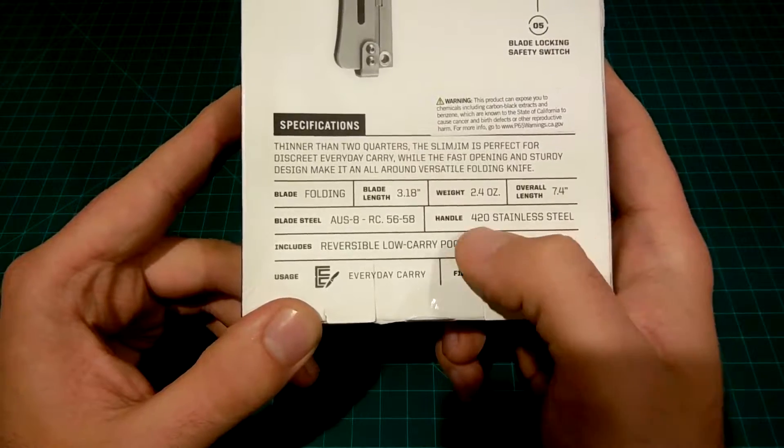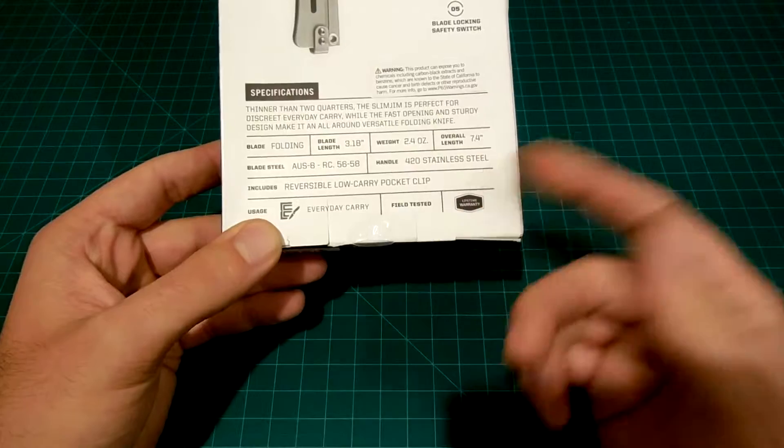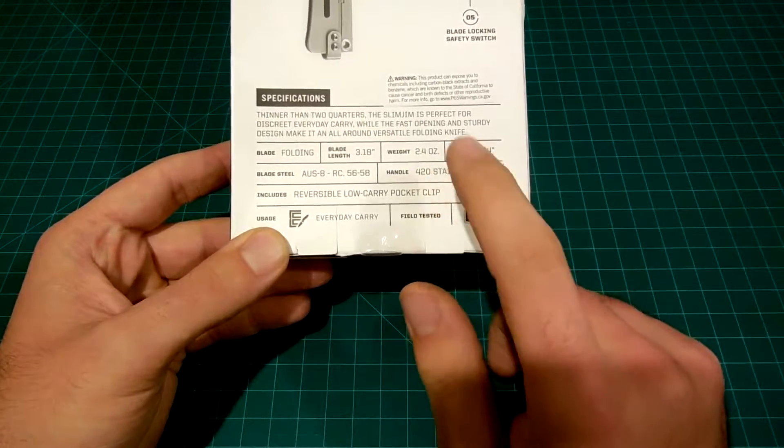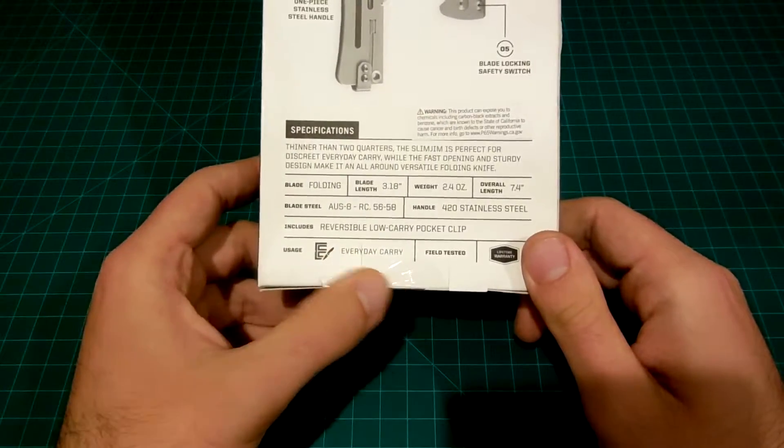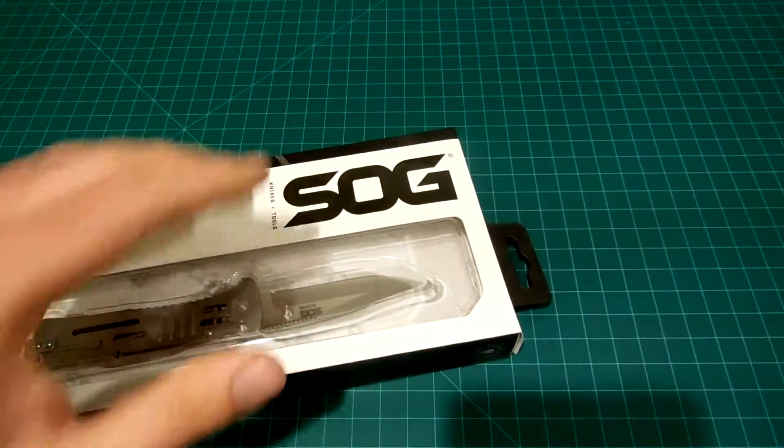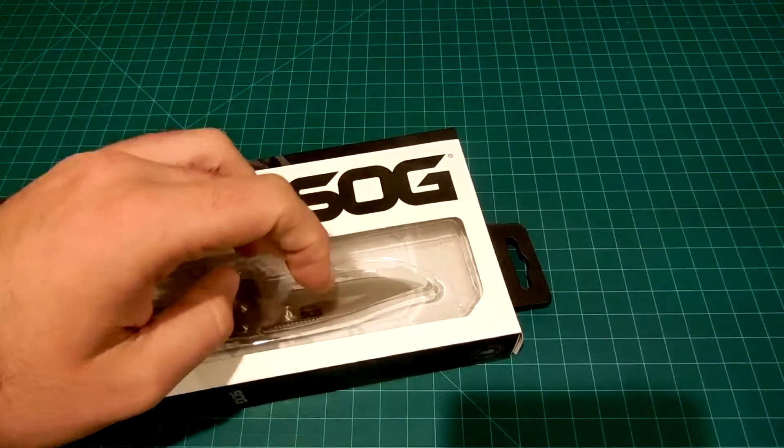This is interesting - the handle is made out of 420 steel, which some of the lower budget and entry level knives have as their blade material. They use it on the handle, so that's pretty cool. Enough talking, let's get into it.